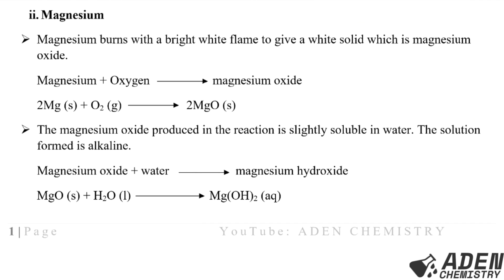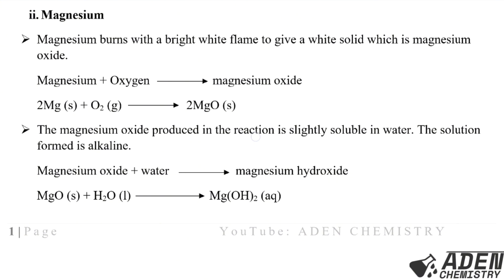The second element in period 3 is magnesium. Magnesium burns with a bright white flame to give a white solid which is magnesium oxide. The word equation is: magnesium plus oxygen gives magnesium oxide. The balanced chemical equation is: two moles of magnesium solid react with one mole of oxygen gas giving two moles of magnesium oxide. The magnesium oxide produced is slightly soluble in water, and the solution formed is alkaline.